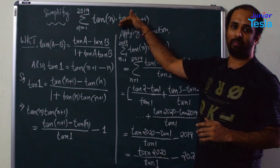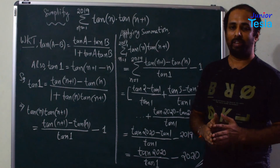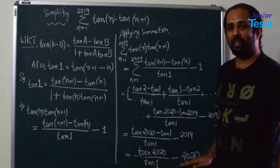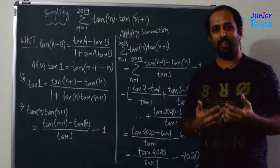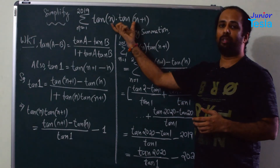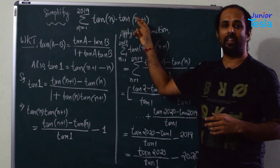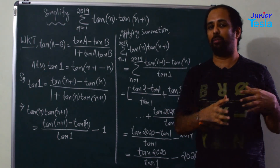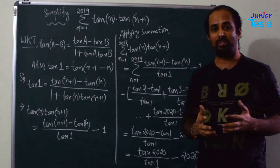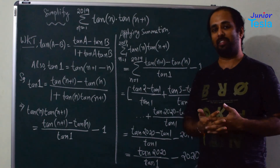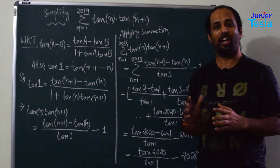This is the final answer for this expression. Remember, in the problem we had 2019 terms, and in the final answer we have only two terms: tan(2020) / tan(1) − 2020. The key takeaway is: whenever you have the product of two terms in a summation, try to write it as the difference of two terms. Here it works well because one term involves n and another involves n+1, so many things cancel and we are left with only two terms. This is a good standard problem of summation involving a trigonometric ratio, which is the speciality of this problem.